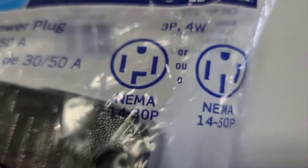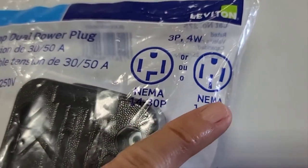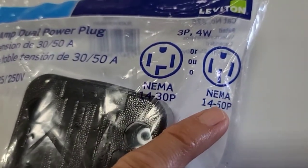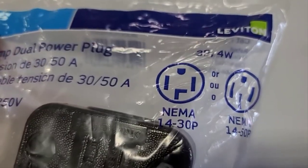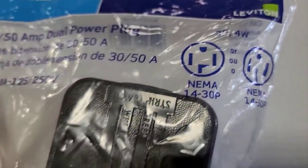This one is set up for two configurations. This is the standard 50 amp RV and this one is typically for a stove or some other kind of appliance. Here's the plastic housing and that's the strip gauge.